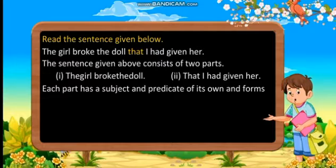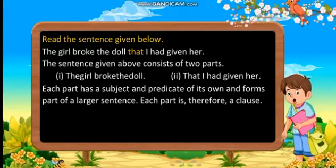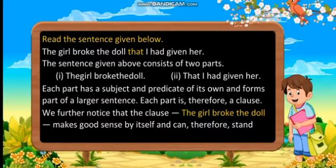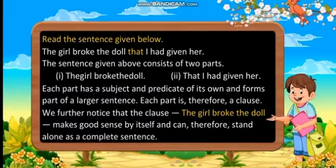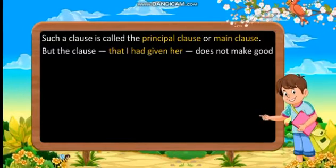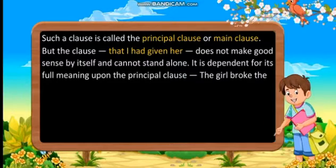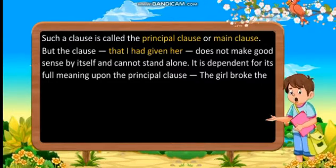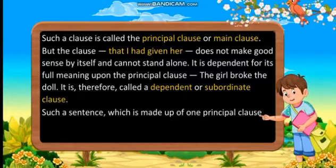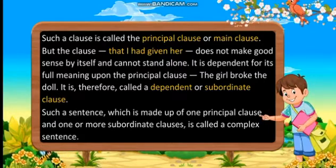Each part has a subject and predicate of its own and forms part of a larger sentence. Each part is, therefore, a clause. You further notice that the clause 'the girl broke the door' makes good sense by itself and can, therefore, stand alone as a complete sentence. Such a clause is called the principal clause or the main clause. But the clause 'that I had given her' does not make good sense by itself and cannot stand alone. It is dependent for its full meaning upon the principal clause 'the girl broke the door.' It is, therefore, called a dependent or subordinate clause. Such a sentence which is made up of one principal clause and one or more subordinate clauses is called a complex sentence.